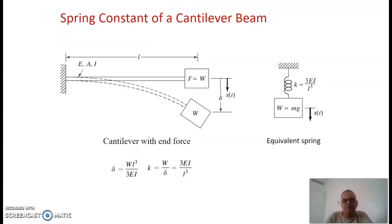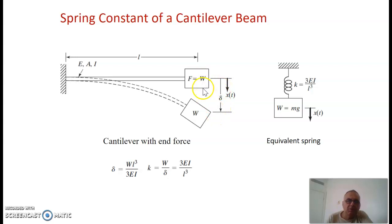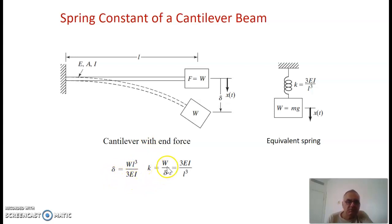For example, if you have a cantilever beam in transverse motion, the deflection of that beam at its tip will be delta. Because of the weight at the tip of the beam, if it deforms an amount delta, again from strength of materials, we can find that delta is WL³ over 3EI, from which the force over the displacement gives you the spring constant. The equivalent spring constant for a cantilever beam is 3EI over L³.